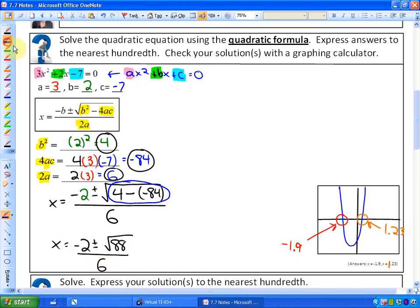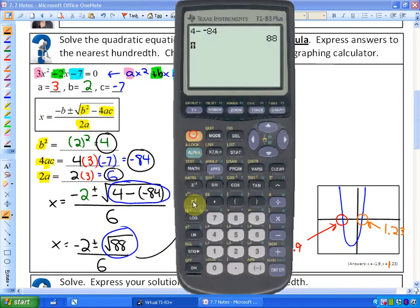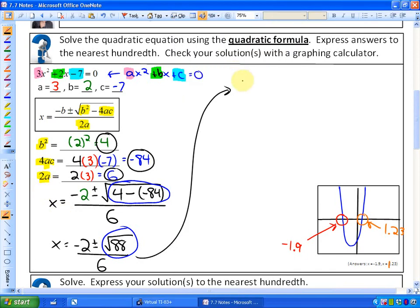The next thing to do, which I'll circle in blue, is to simplify the square root of 88. The square root of 88 is 9.38. So we have x equals negative 2 plus or minus 9.38, all over 6.